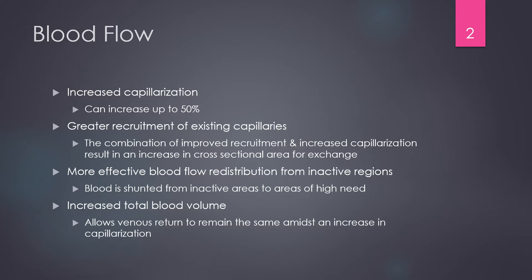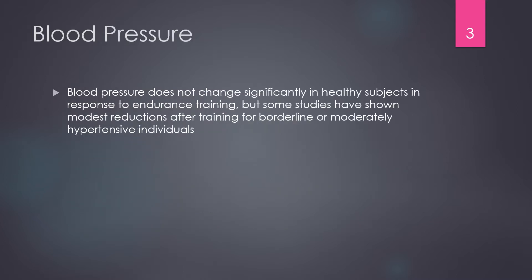We'll also have more effective blood flow redistribution from inactive areas — we'll vasoconstrict vessels leading to inactive areas and send that blood to areas of high need. We'll also see a total increase in blood volume, which is a combination of both increasing plasma volume and increasing red blood cell count. Both of those factors contribute to greater total blood volume, meaning more oxygen can be carried and more fluid is available for sweating and thermoregulation.